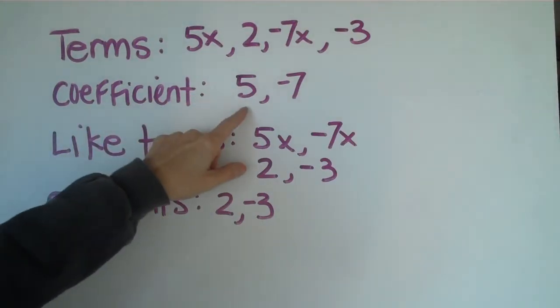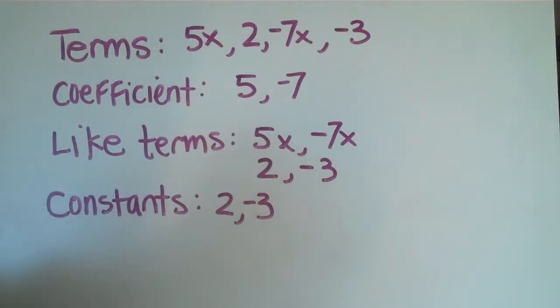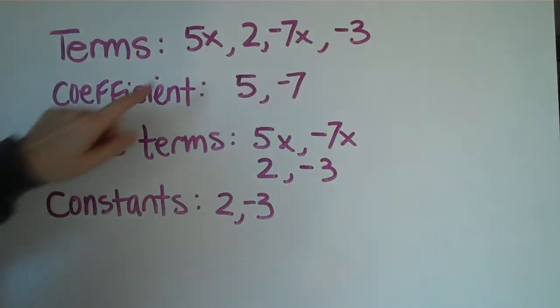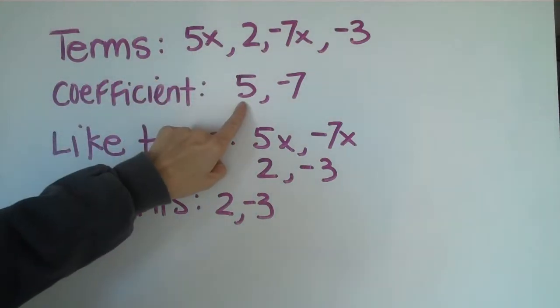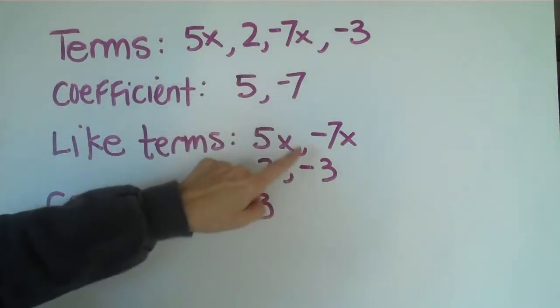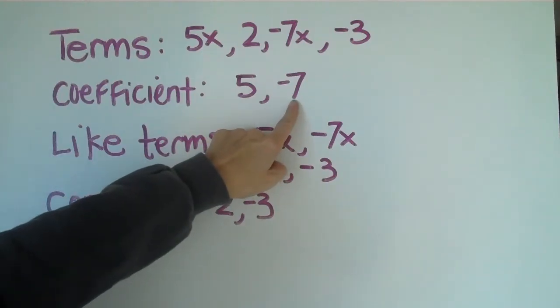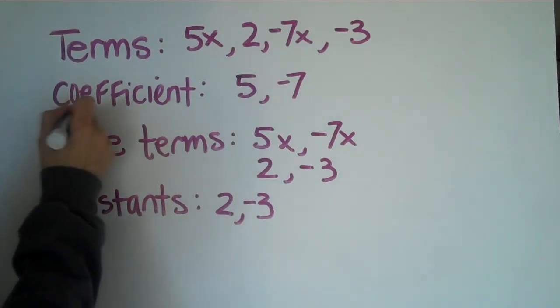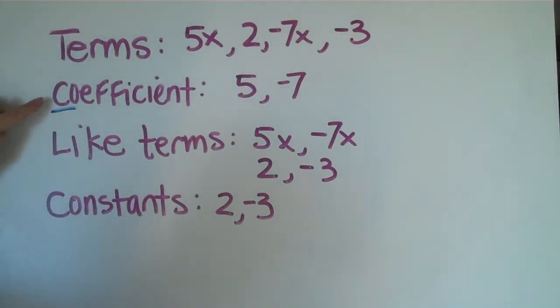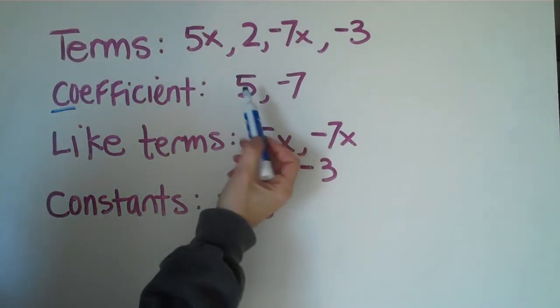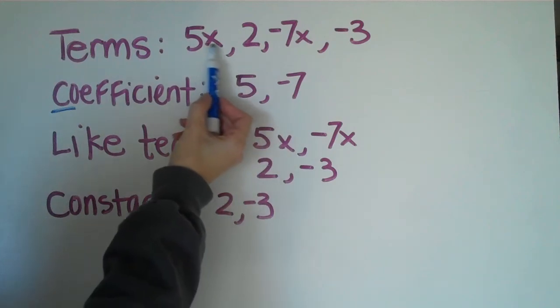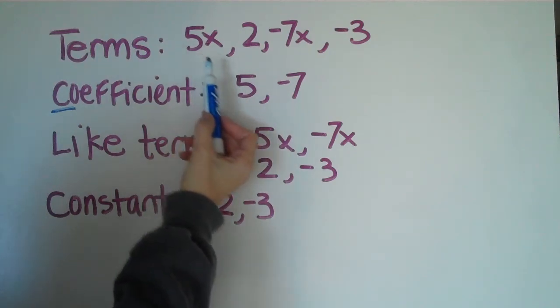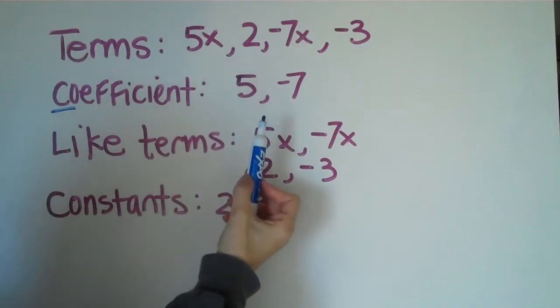The coefficient would be anything in front of a variable. Like 5x, the coefficient would be 5. Negative 7x, the coefficient would be negative 7. So if you think of the first two letters of coefficient, co, kind of like a co-worker or co-operate, it means you're working with somebody else, right? So 5x is working together. The coefficient will always be that first number next to the variable.